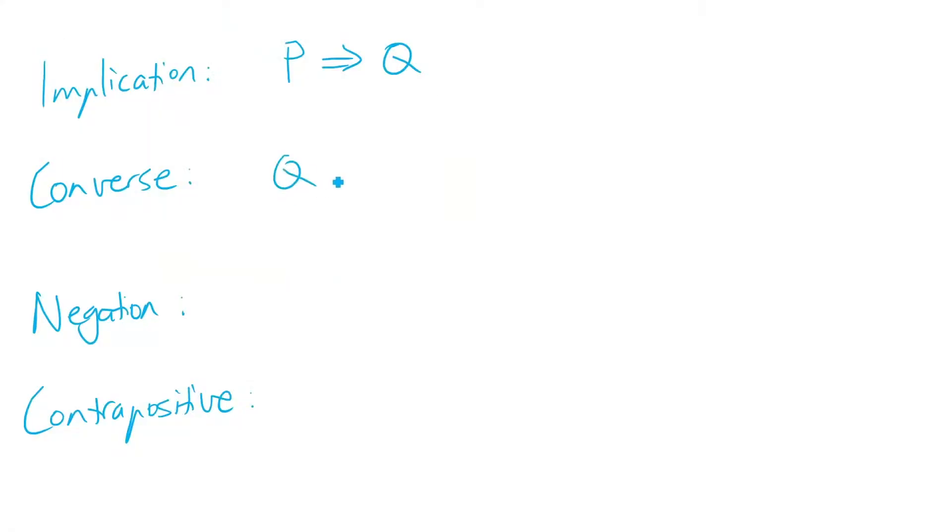The next one is the converse. If we have a statement if P then Q, then the converse of that statement will be if Q then P. We can denote that two different ways: either Q → P, or using a backwards arrow P ← Q. Keep in mind that the converse of a statement isn't always true — just because something's a dog doesn't mean it's a poodle, and just because a number's even doesn't mean it's the number two.